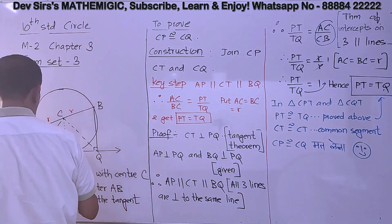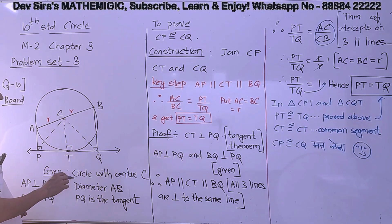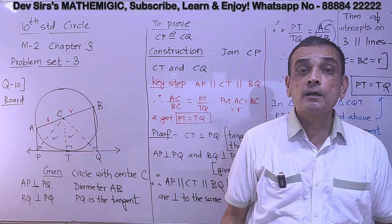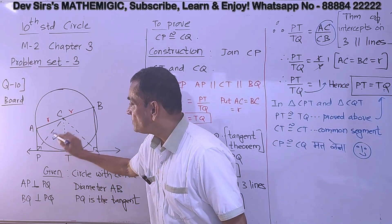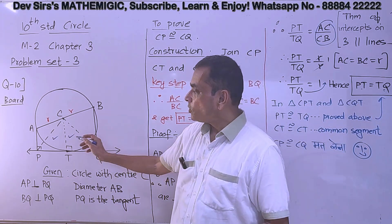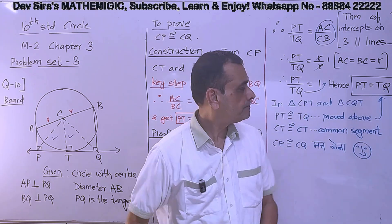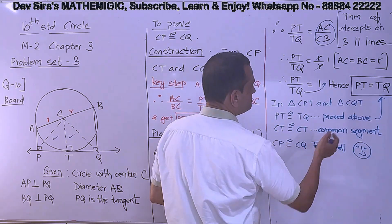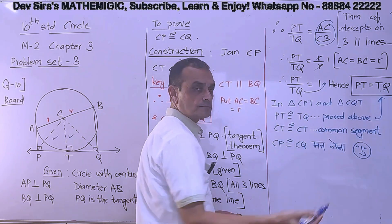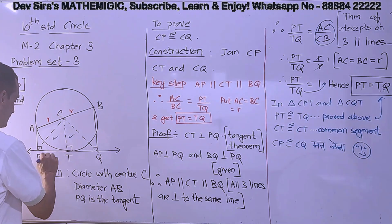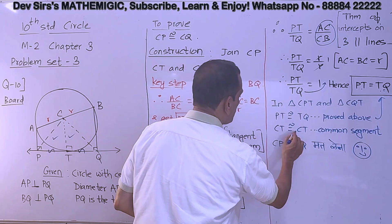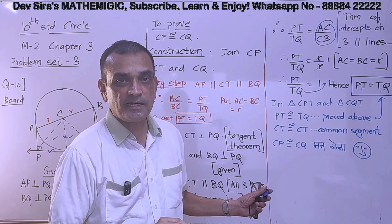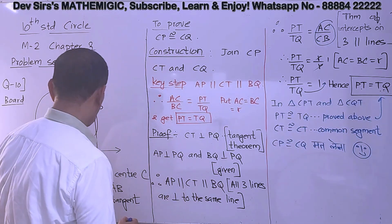As soon as you get PT equal to TQ, directly go to these two triangles. See. Triangle CPT and triangle CQT. These two triangles. We have to show them congruent. Why show them congruent? Because we have to show CP congruent to CQ. Simple. So how will you show them congruent? Let us see. PT equal to TQ. Proved above. PT equal to TQ. Proved above. Okay. So I will indicate over here. CT congruent to CT. Our favorite line. Favorite step. CT congruent to CT. Common side. Common segment.